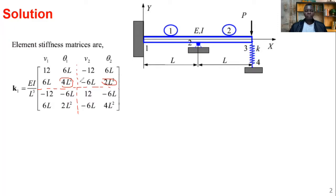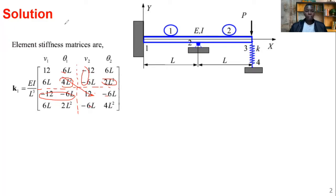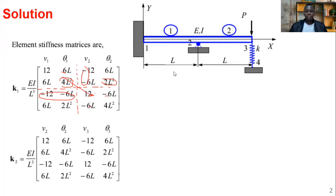The pattern continues: six L, four L squared. When you move across the columns they become negative; moving down the row it is negative; and along the main diagonal you put the negative sense on the minor diagonal. K1 and K2 are the same because it's just a matter of measurement.